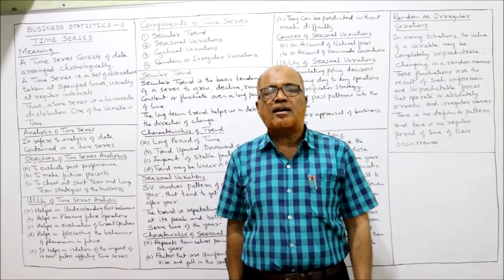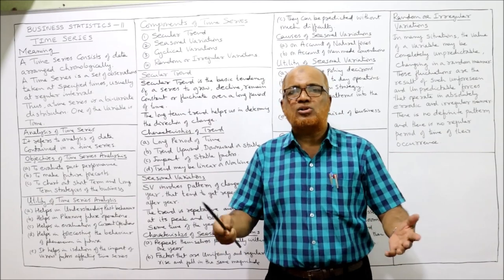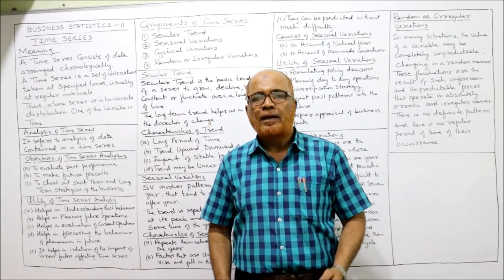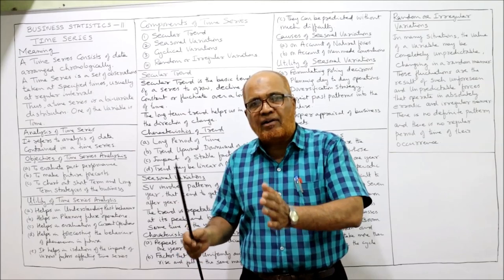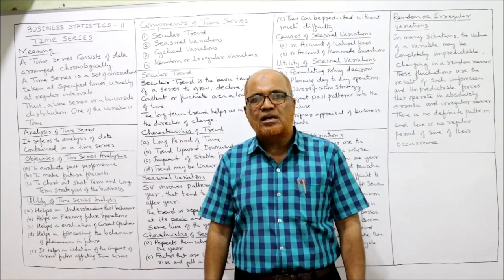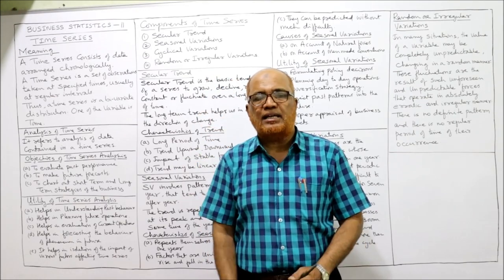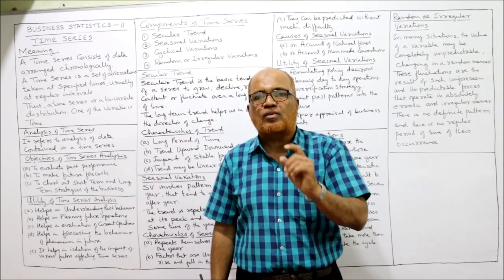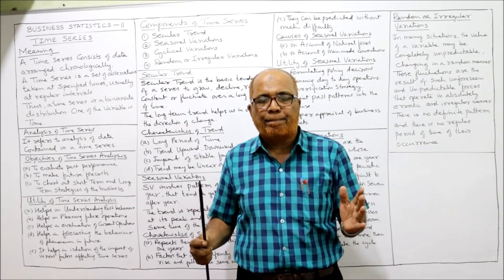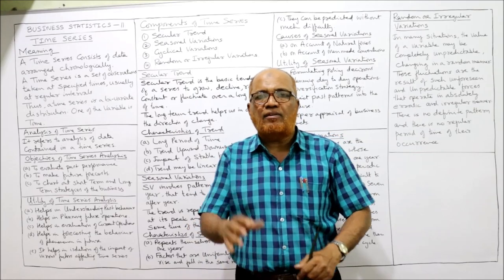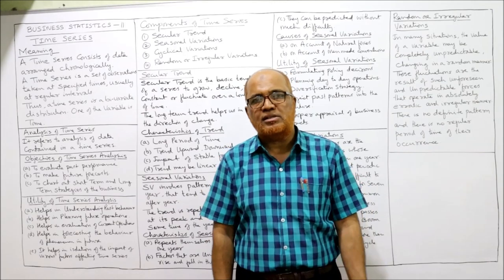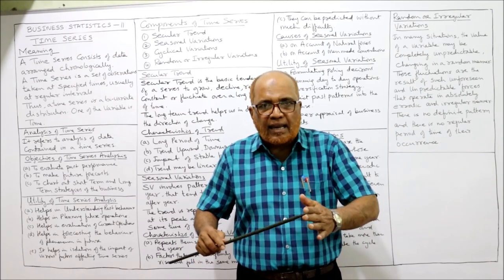Similarly, apart from sales, a business organization will record the profits for the last 10 years. If you come to governmental departments, the government will record agriculture production for the last 10 years, industrial production for the last 10 years, import and export for the last 10 years. In all these cases, the variables are recorded according to time, and that is called time series.